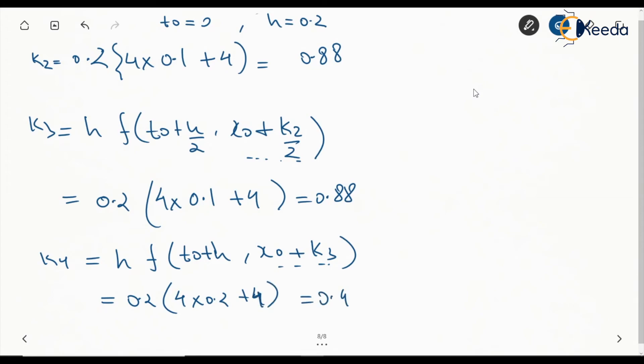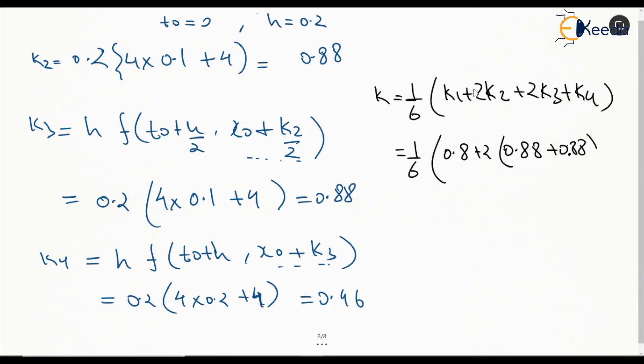So we have all the values required. This K is going to be 1/6 times (K₁ + 2K₂ + 2K₃ + K₄), which is 1/6 times (0.8 + 2 times 0.88 + 0.88 + 0.96). So K equals overall 0.88. This is the Δx, or increment in x, 0.88 after this first iteration using Runge-Kutta method.